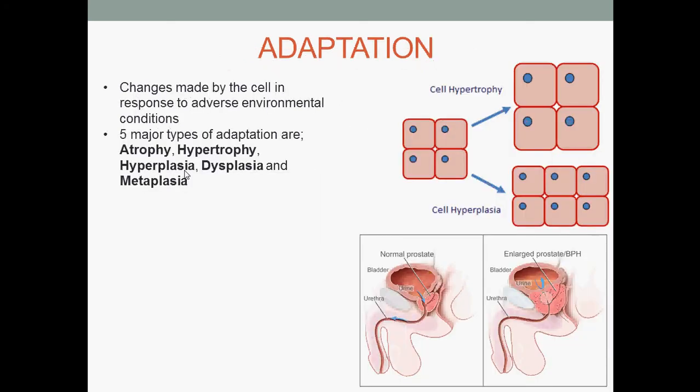When coming face to face with an adverse environmental condition, the cell adapts. Adaptations are the changes made by the cell in response to adverse environmental conditions. The five major types of adaptation are atrophy, hypertrophy, hyperplasia, dysplasia, and metaplasia. Now let's go through these major types of adaptation one by one.